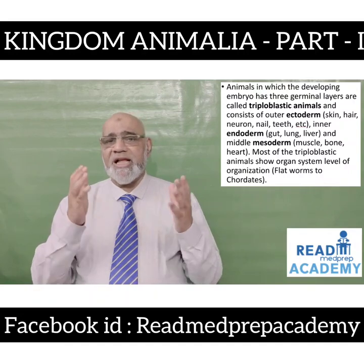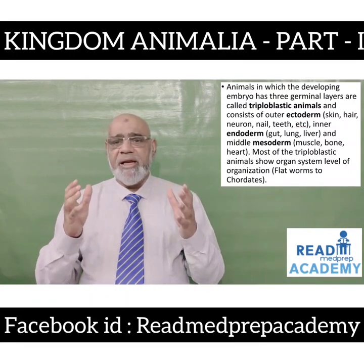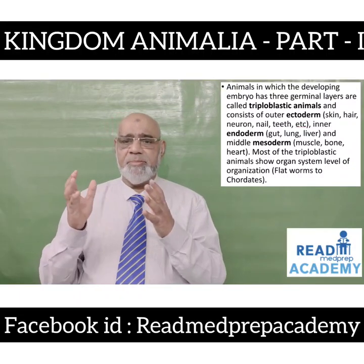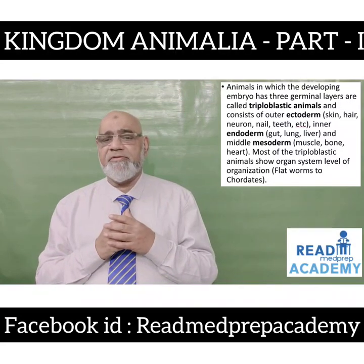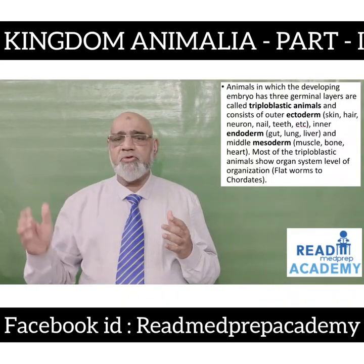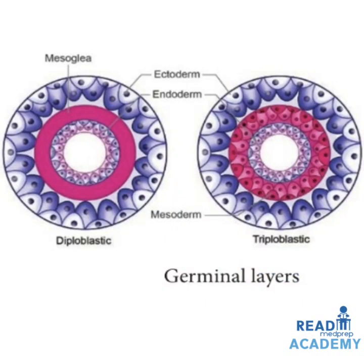The inner endoderm forms the gut, lung, and liver, while the middle layer called the mesoderm forms the muscle, bone, heart, etc. Most triploblastic animals show organ system level of organization. Example: flatworms to chordates. In the cut section image you can see the diploblastic animal with the ectoderm and the endoderm surrounding the gastric cavity, and the triploblastic animal showing an additional layer of cells called the mesoderm in between the ectoderm and the endoderm.